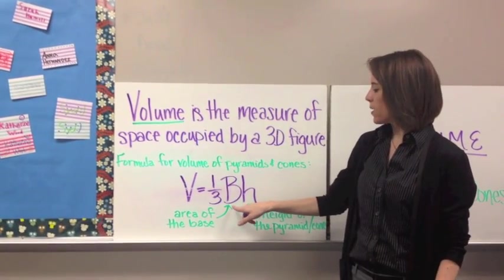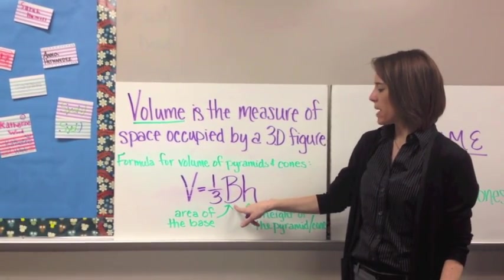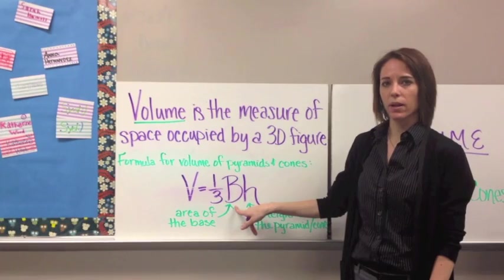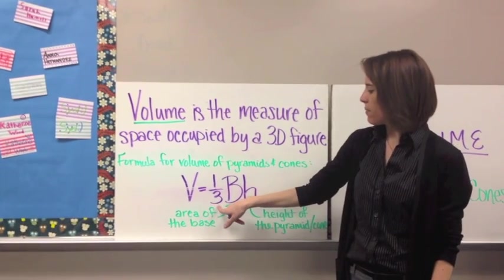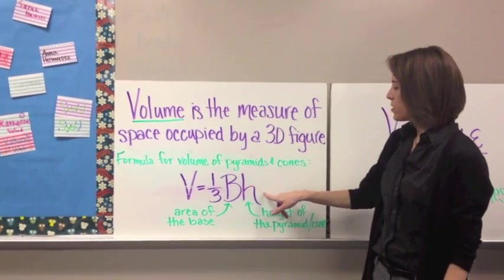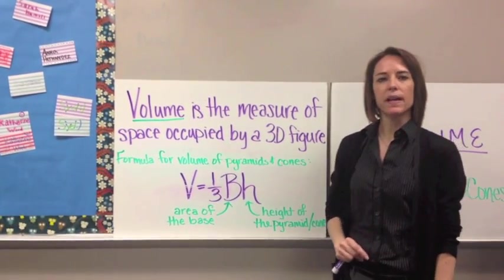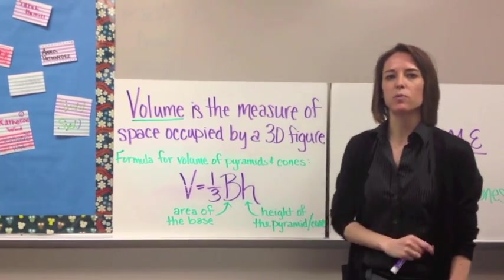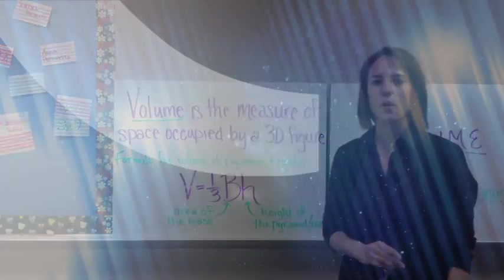You're always going to find whatever shape the base is, plug it into this formula, divide it by 3, and multiply by the height — and that should give you the volume. Let's move on to our first example.